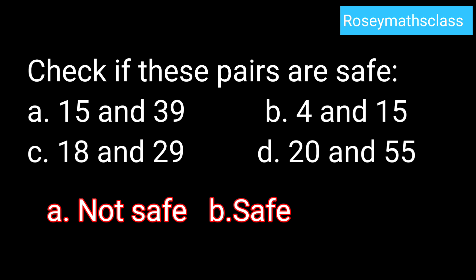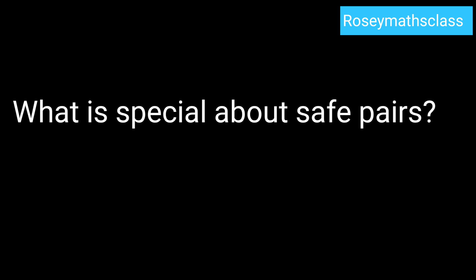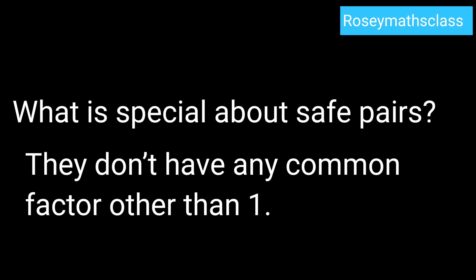18 and 29 is safe. 20 and 55 is not safe. We can use the jump size of 5 to reach both 20 and 55. What is special about safe pairs? They don't have any common factor other than 1.